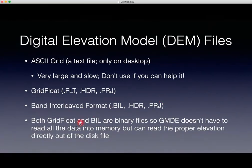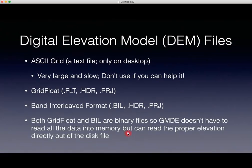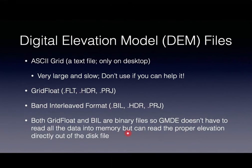Both grid float and BIL are binary files, so GMDE does not have to read all of the data into memory. Instead, it can go directly to the correct spot within the binary file and retrieve the correct elevation for the coordinates you send it. So they're very fast and also very efficient in terms of memory.